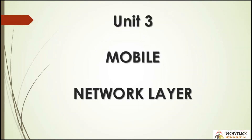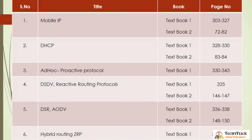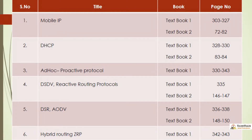Unit 3: Mobile Network Layer. There are a total of 10 topics in this unit. First topic: Mobile IP — Textbook 1 pages 303 to 327, Textbook 2 pages 72 to 82. Second topic: DHCP, which stands for Dynamic Host Configuration Protocol — Textbook 1 pages 328 to 330, Textbook 2 pages 83 to 84. Third topic: Ad Hoc Proactive Protocols — Textbook 1 pages 338 to 348. Fourth topic: DSDV — Destination Sequence Distance Vector — Textbook 1 page 335, Textbook 2 pages 146 to 147.